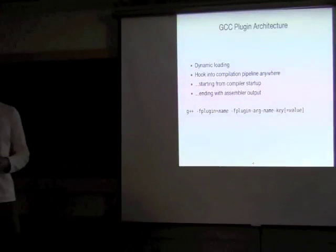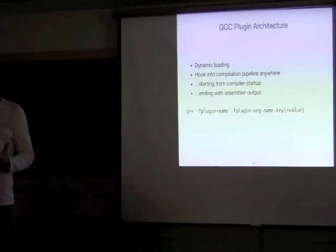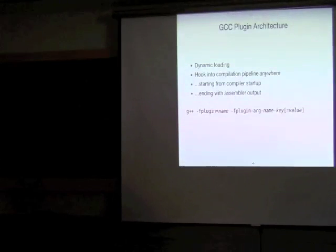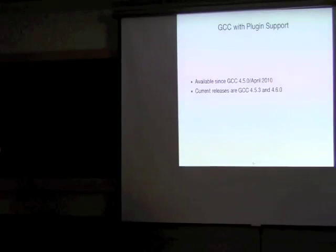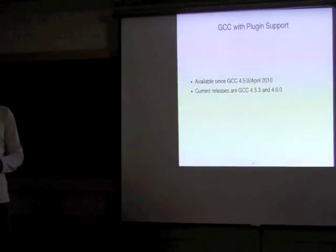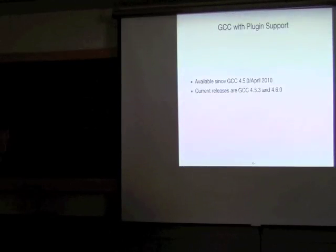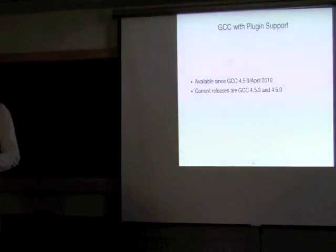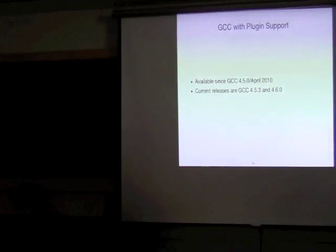Let's dive into the new GCC plugin architecture. It uses dynamic loading and allows us to hook into the compilation pipeline anywhere, starting from the compiler startup and ending with assembler output. The command line on this slide shows how we can load a plugin and pass some command line options to it. The first version of GCC which had plugin support is 4.5, released in April 2010. Current mainline releases with plugin support are 4.5.3 and 4.6, so there are two mainline versions now that have plugin support. While the architecture is fairly new, it's been around for about a year.